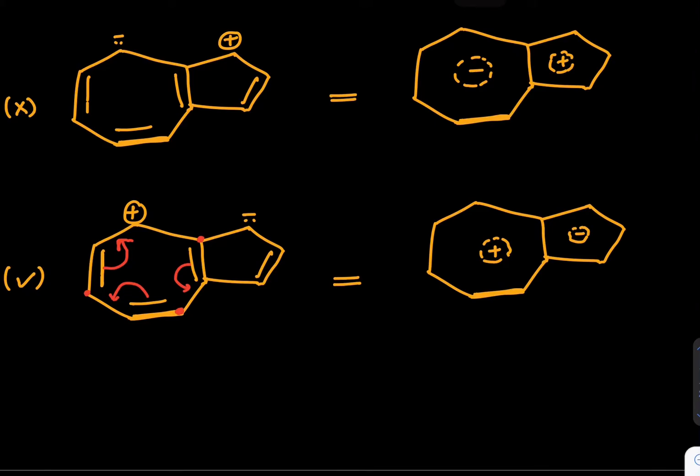Similarly, if you see the other ring, negative moves here so then the double bond can come and move here. The next time this negative moves here so double bond can come here. Like that it is also stable.